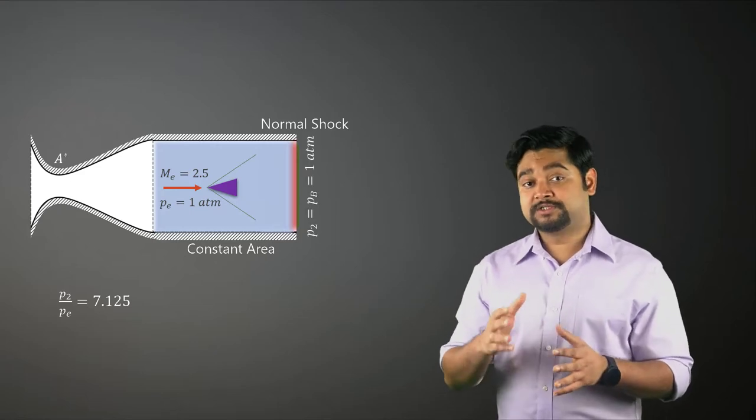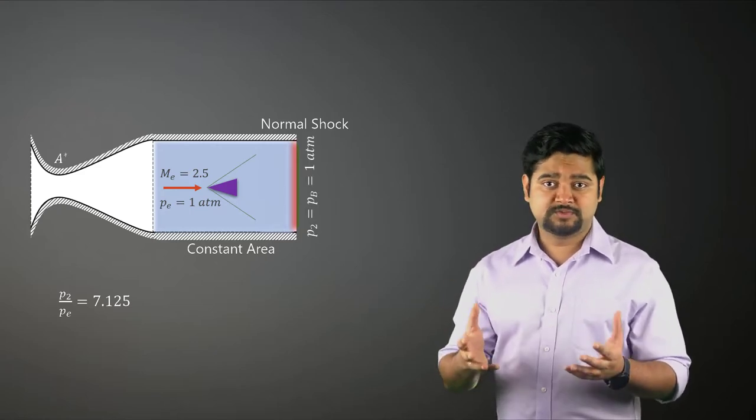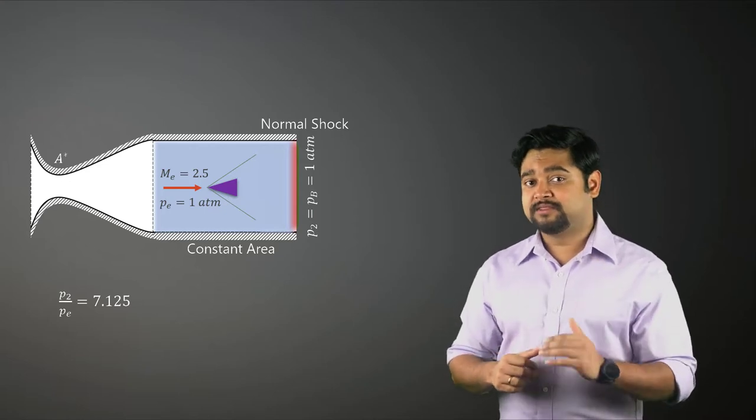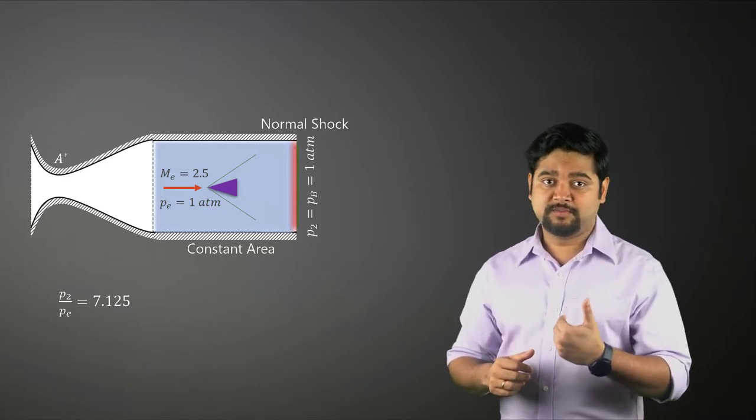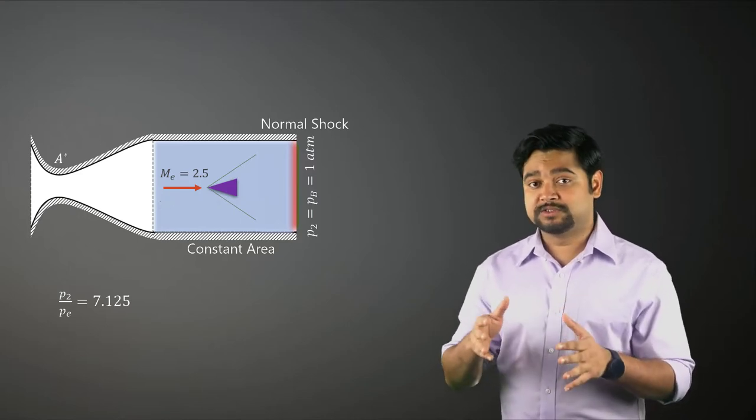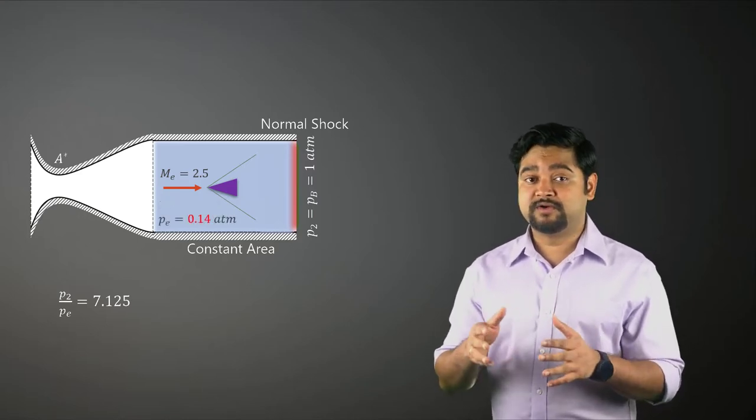Now, due to this, the pressure downstream of the normal shock is 1 atm as we know. And at Mach 2.5, the static pressure ratio across the shock will be 7.125, which means the pressure at the nozzle exit is 0.14 atm.